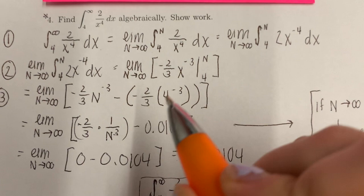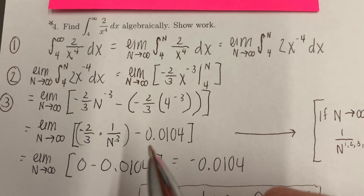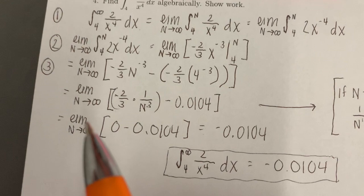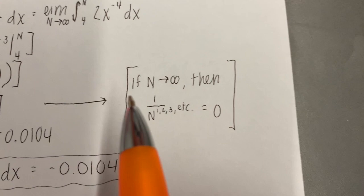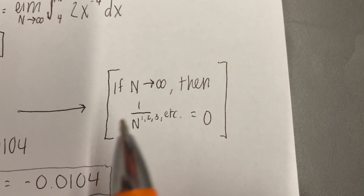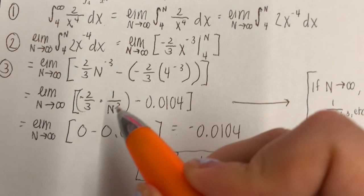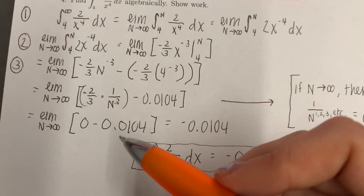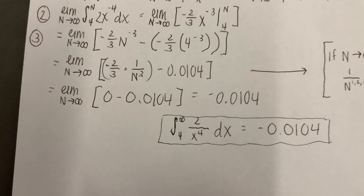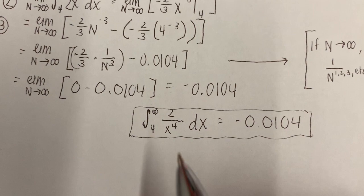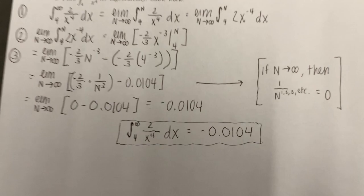We compute negative 2 thirds times 4 to the negative 3rd, which equals negative 0.0104. Notice the two negatives make a positive, but the answer is still negative, so we subtract. Since n approaches infinity, 1 over n to any power equals 0, so negative 2 thirds times 1 over n to the 3rd equals 0. That gives us 0 minus 0.0104, so the integral from 4 to infinity of 2 over x to the 4th dx equals negative 0.0104.